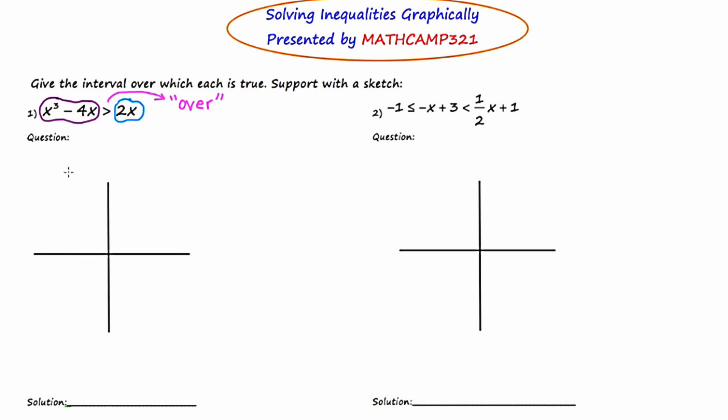The next prompt is to formulate a question. You're going to read the inequality from left to right, but instead of using specific algebra, you're just going to use the colors with the joining word. So for this particular problem the question will be: where is the purple over the blue?